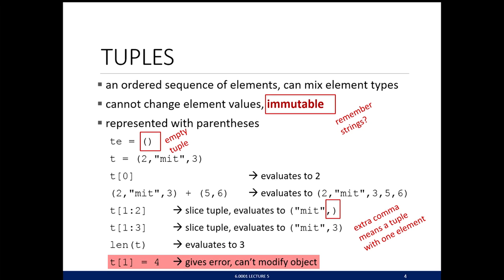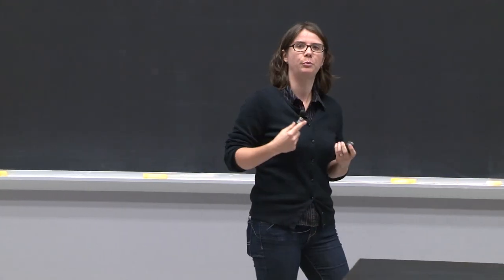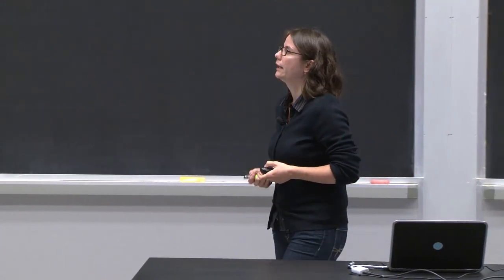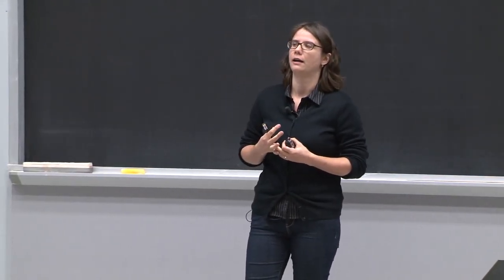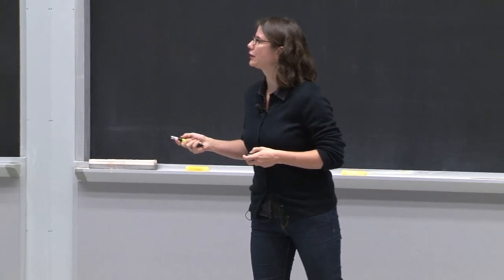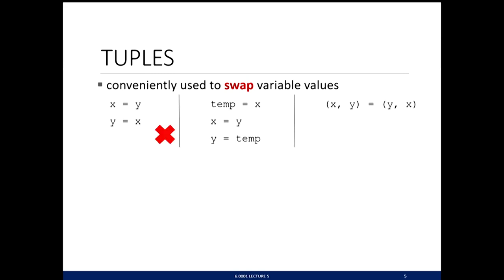So why would we want to use tuples? Recall a few lectures ago we looked at code where we tried to swap the values of variables x and y. The first approach didn't work because you're overwriting the value of x. Instead, we created a temporary variable to store x, overwrote it, then used the temporary variable. It turns out this three-line code can actually be written in one line using tuples: x comma y equals y comma x. Python assigns the value of y to x and the value of x to y.